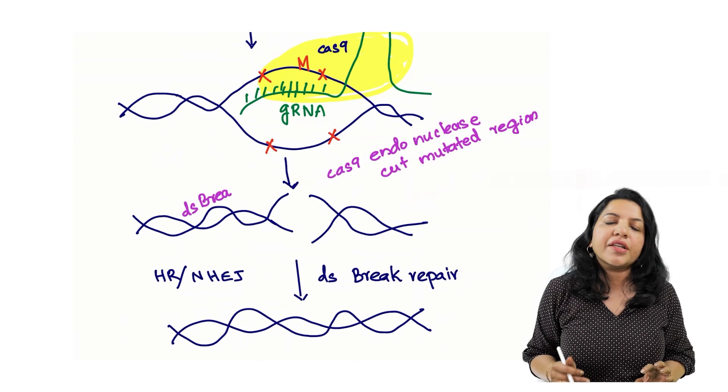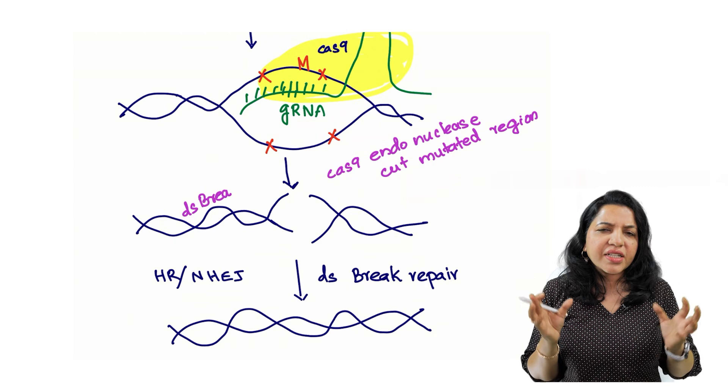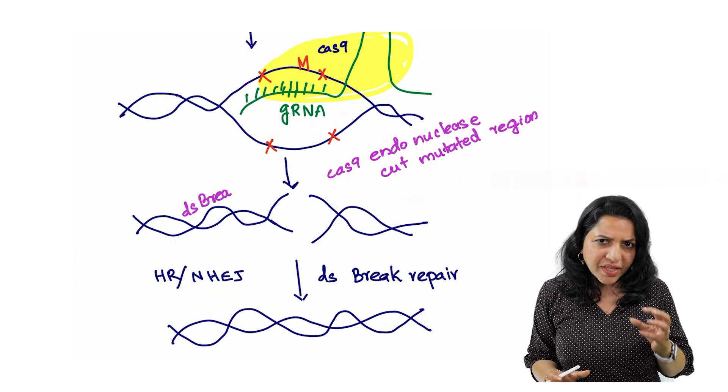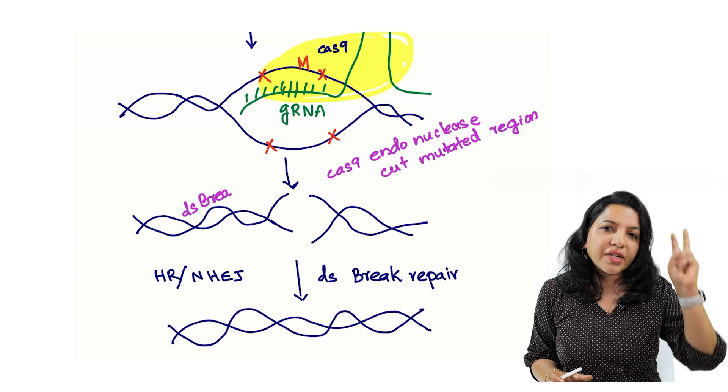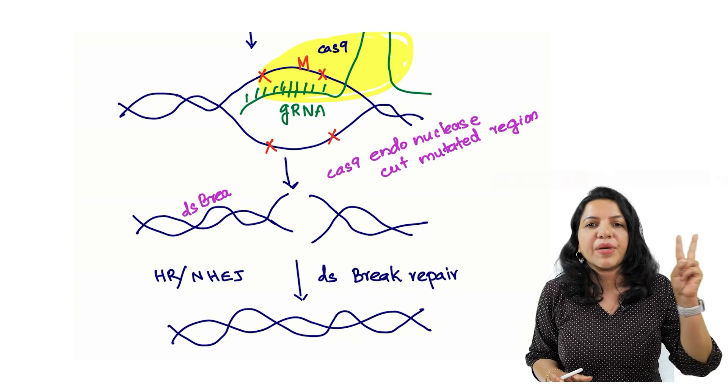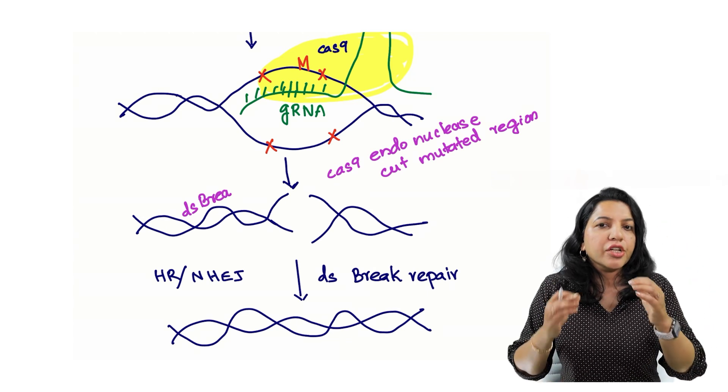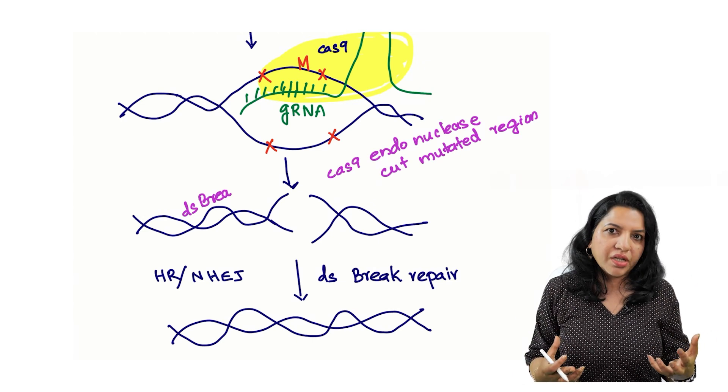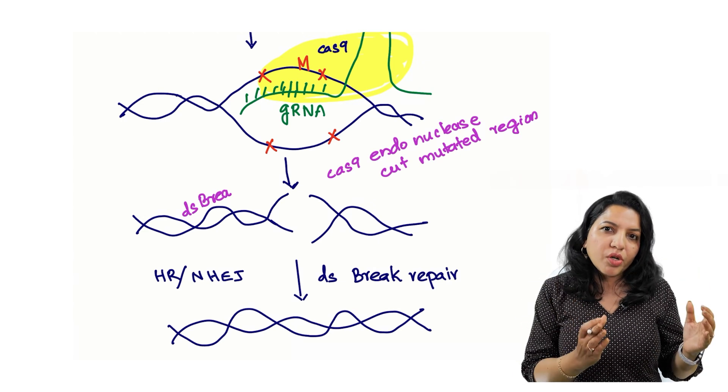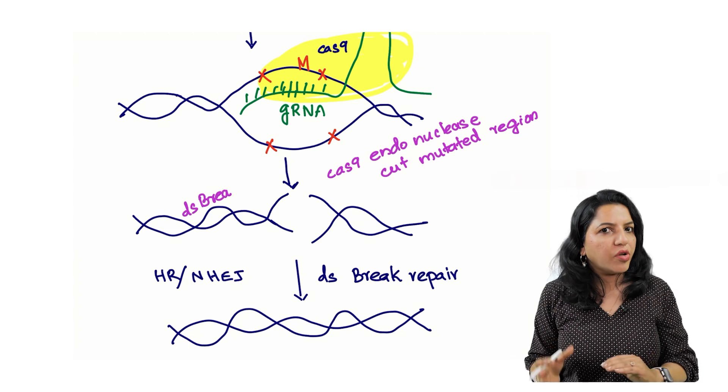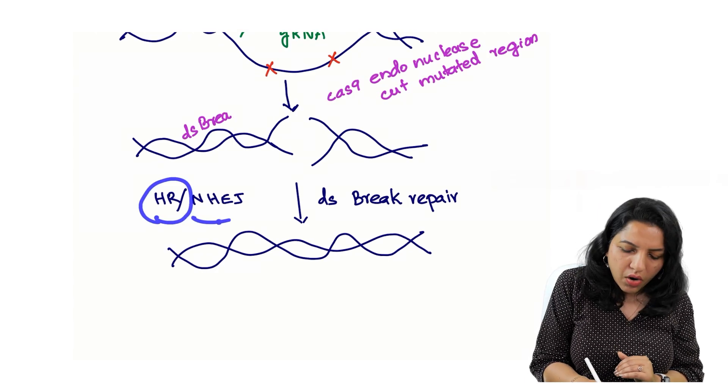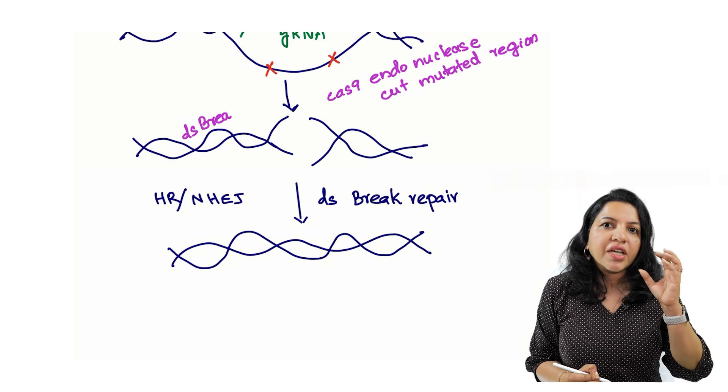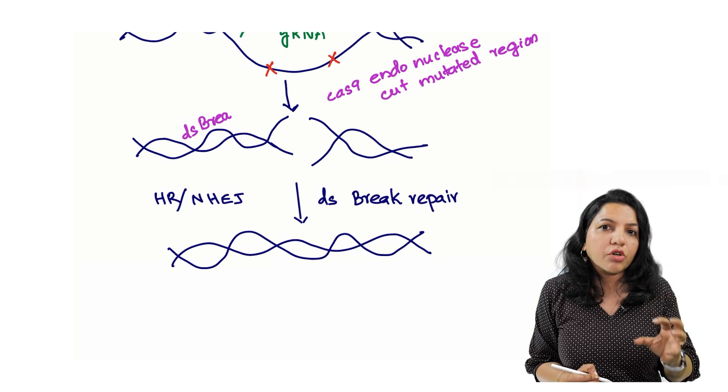Now after cutting, what are we getting? We are getting a defect in this human DNA. That defect is called a double-stranded break. There are two endogenous mechanisms in the human body to correct this double-strand break: homologous recombination or non-homologous end joining. Either using homologous recombination or non-homologous end joining, it is going to edit the human genome.